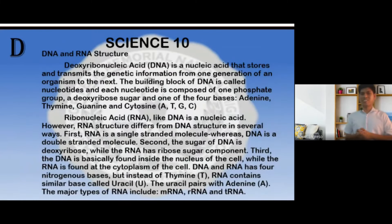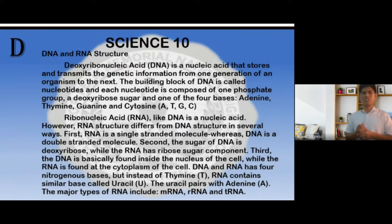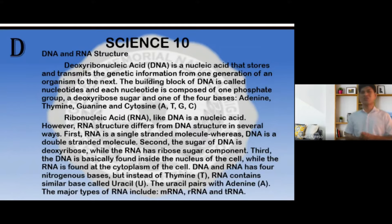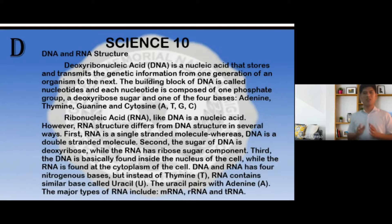Deoxyribonucleic acid, or DNA, is a nucleic acid that stores and transmits the genetic information from one generation of an organism to the next. The building block of DNA is called nucleotides. Each nucleotide is composed of one phosphate group, a deoxyribose sugar, and one of the four bases: adenine, thymine, guanine, and cytosine. The rule is that adenine always pairs with thymine, and guanine always pairs with cytosine.